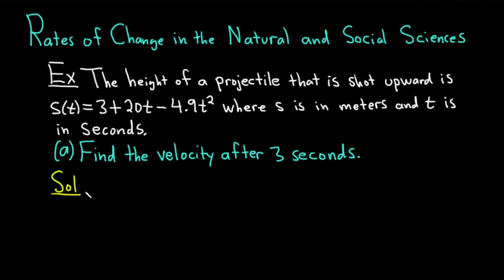Solution. So we are given the position function, which is s(t) = 3 + 20t - 4.9t². And we're asked to find the velocity after 3 seconds. Well, if you have a position function and you take the derivative, you're going to get the velocity function. So all we have to do in this problem is take the derivative of s and plug in 3.